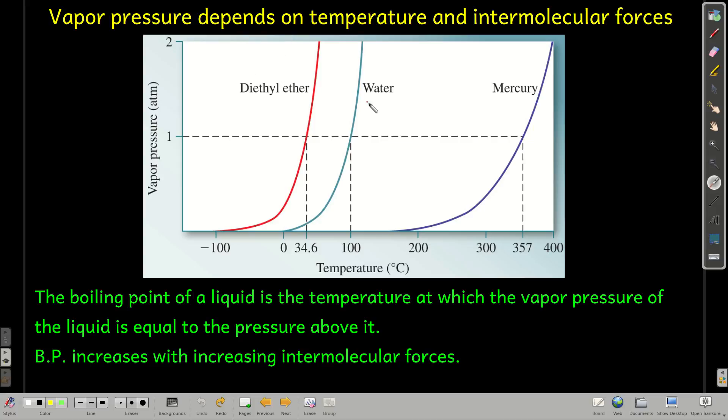Vapor pressure also depends on intermolecular forces. These three compounds here: diethyl ether and water. Diethyl ether has dipole-dipole forces. Water has hydrogen bonding, stronger intermolecular forces here than here. Mercury is a metal, so it has much stronger forces holding the atoms together than either of these guys.